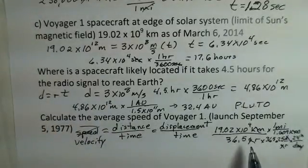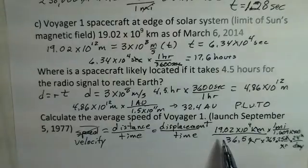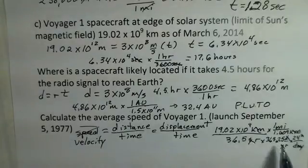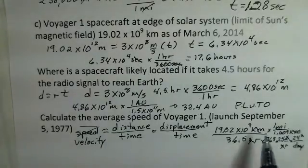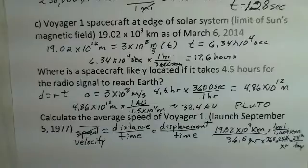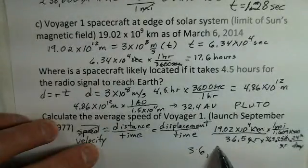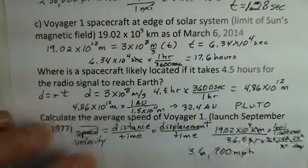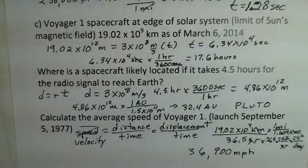And again, you should use your own calculation capability here. 19.02 times 10 to the ninth, divided by 1.609. That's the numerator. Denominator, 36.5 times 365.25 times 24. And when I did this, I came up with 36,900 miles per hour.